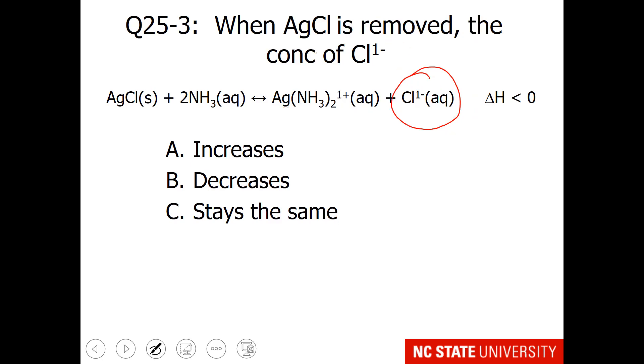Again, thinking of the chloride concentration, what will happen when we remove some silver chloride? Not all of it. There will still be some solid available in the container, but we are going to remove some of it. What will happen to the chloride ion concentration?